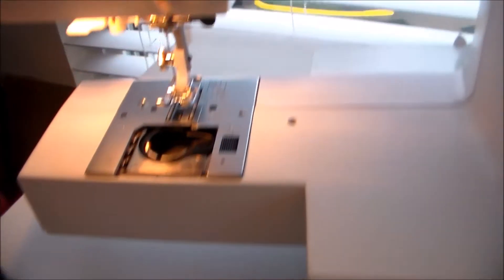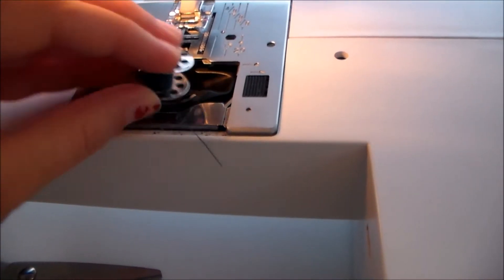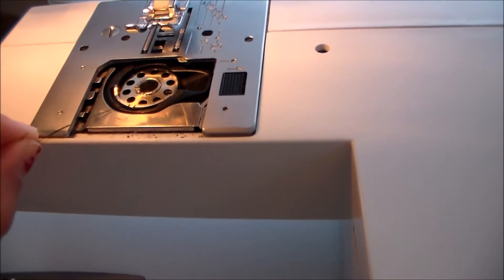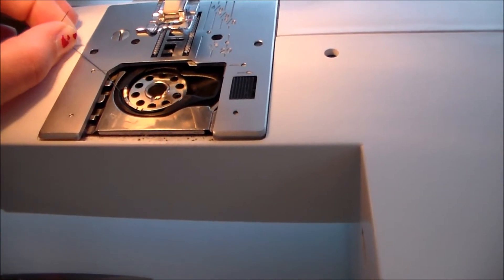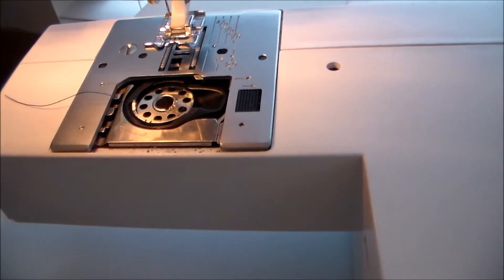So you're going to take your bobbin and there should be a little arrow on your machine there. Drop the bobbin in and take that little piece of thread and pull it back towards the back of the machine. You're going to feel it click into place through a little tiny metal piece right there.